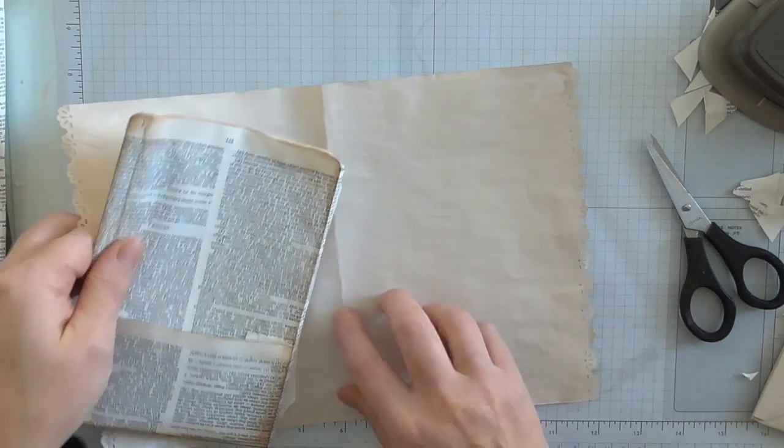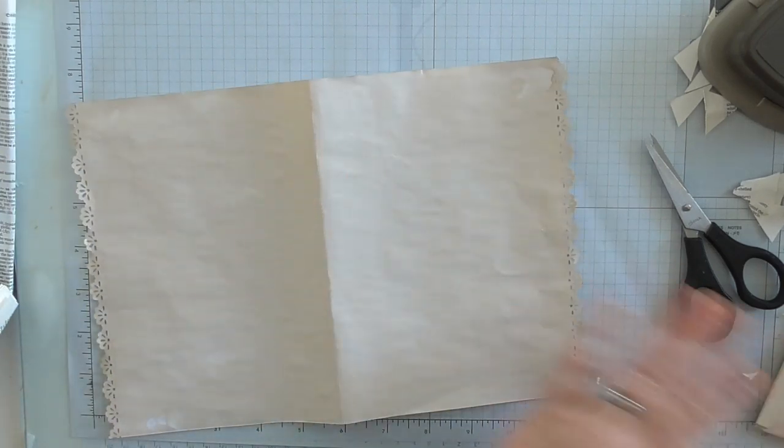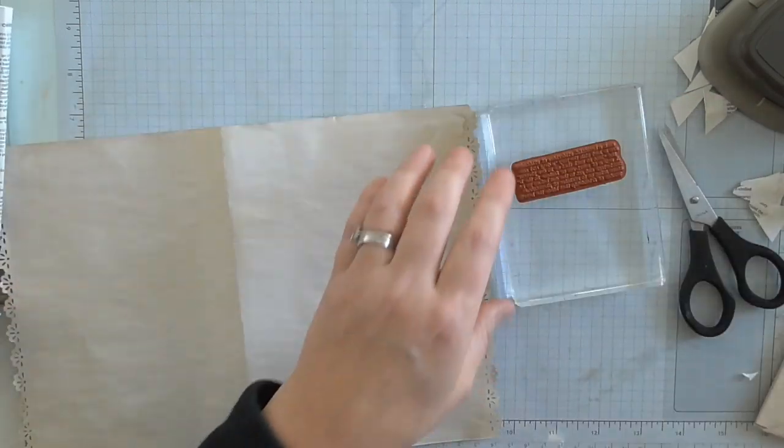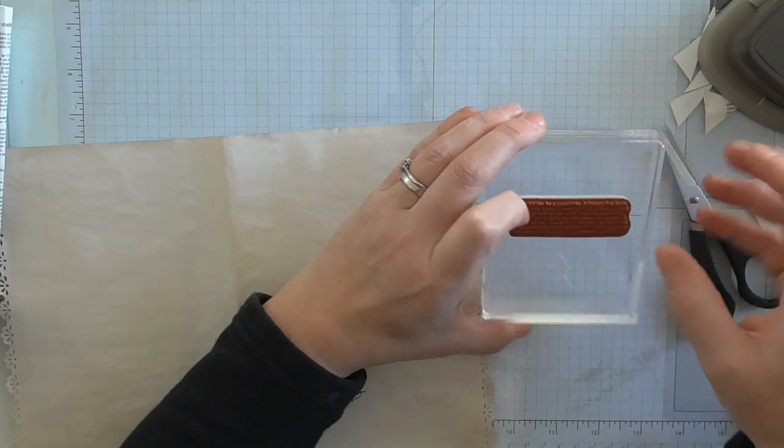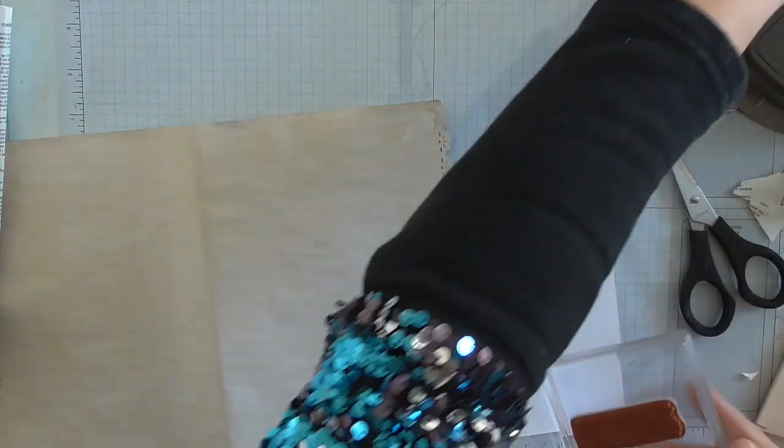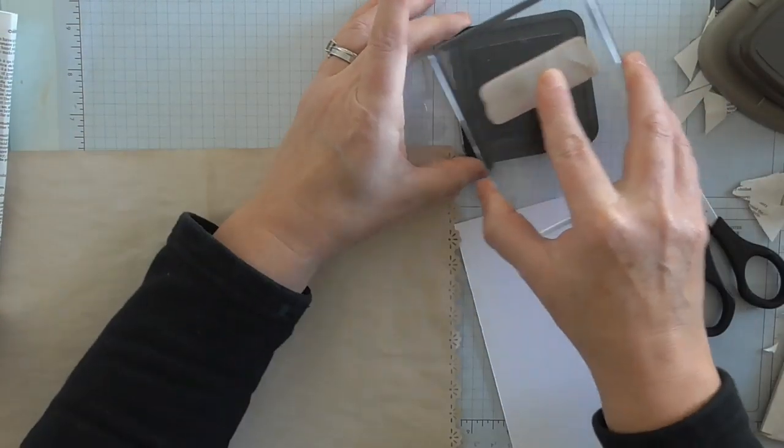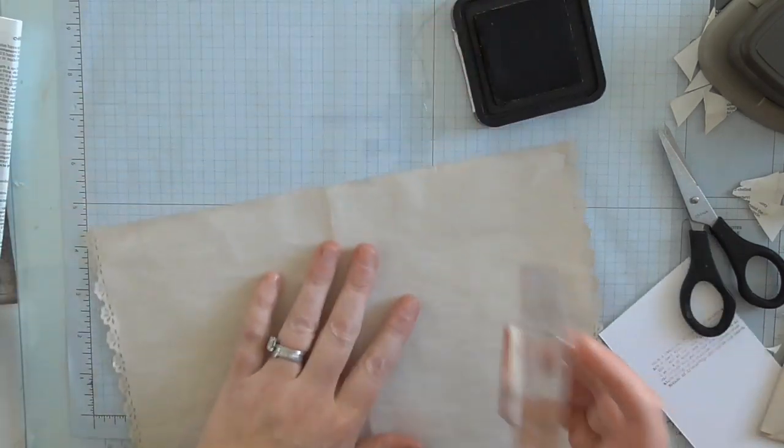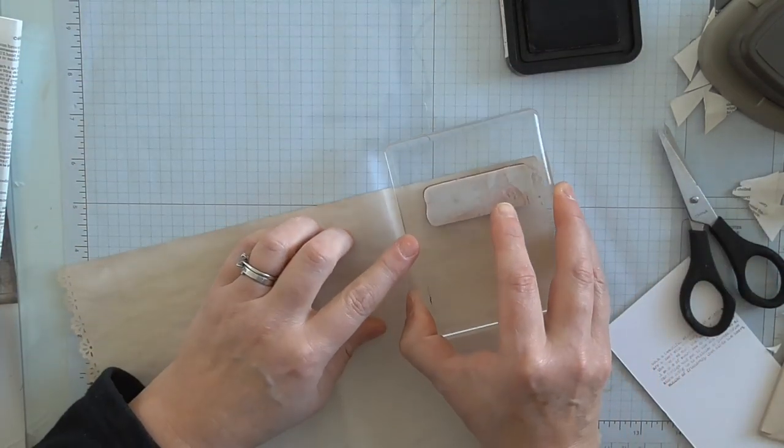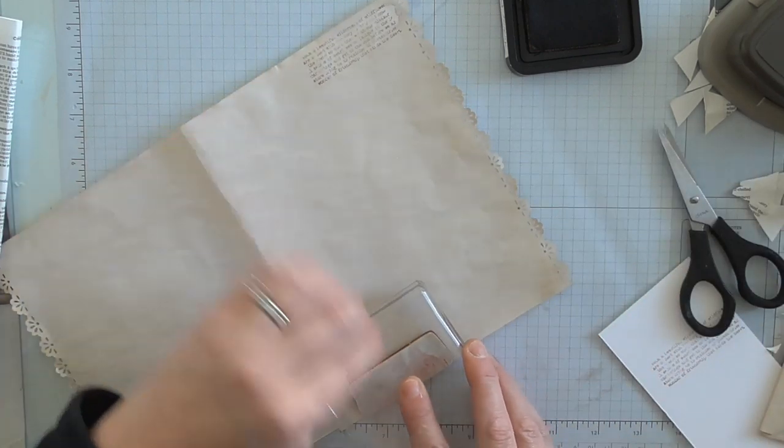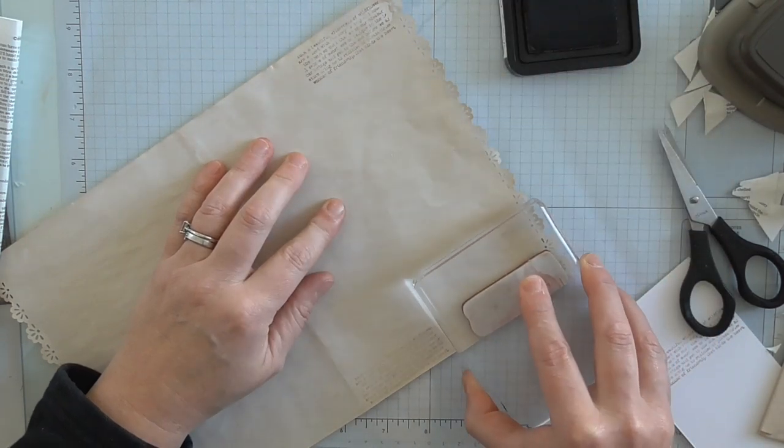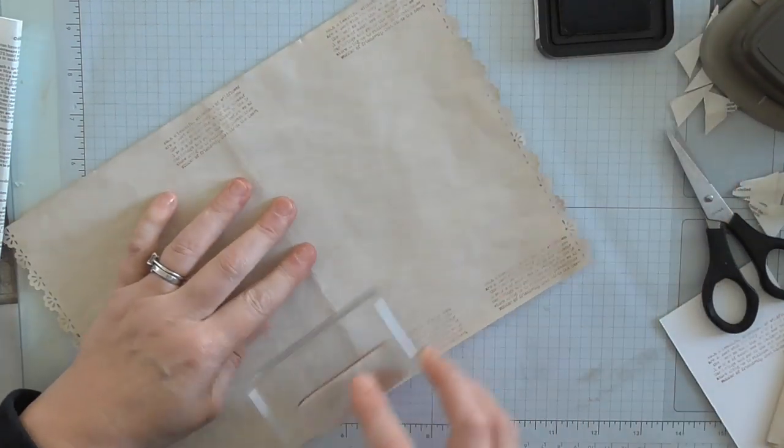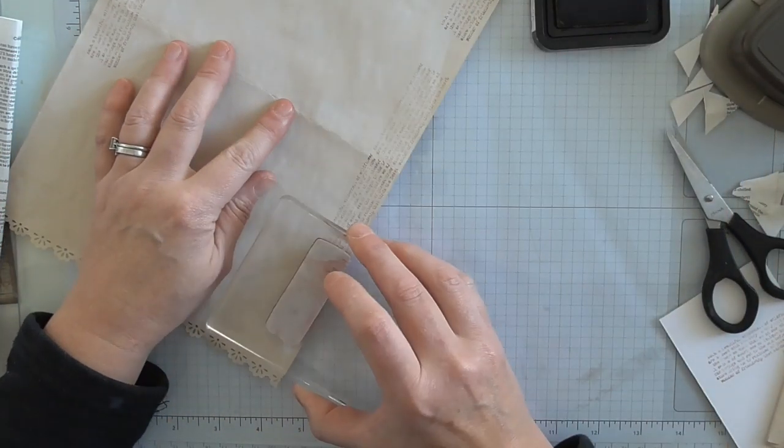But before we do that, we're just going to do some random stamping on there. I'm using this lovely script here. I'm just going to load that on there. Grab one of the inks that I'm using, I'm using Vintage Photo. You can use what inks you want, you could use black, you could use anything, and I'm just going to stamp randomly there. It doesn't matter if some of it gets covered up.